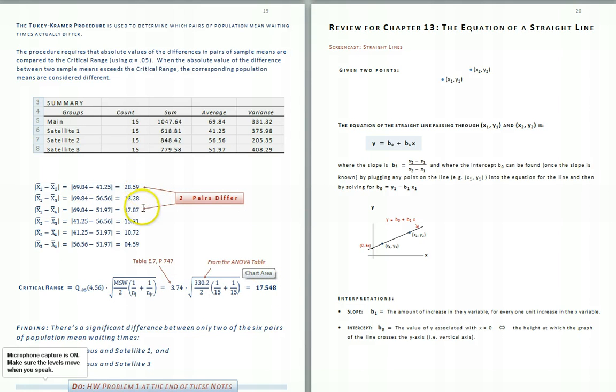When we make our comparisons with the critical range, we observe that there are only two pairs of sample means that have absolute values that exceed the critical range. Our conclusion is that only the main campus and satellite one and the main campus and satellite two have significantly different pairs of mean waiting times.